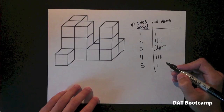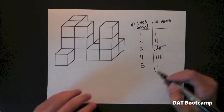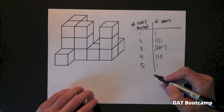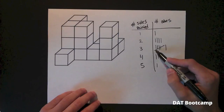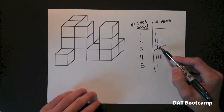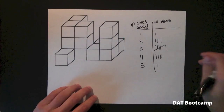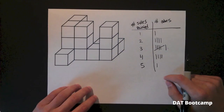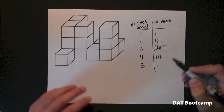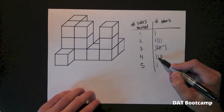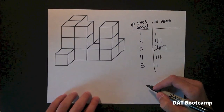Now if the question on the DAT asks how many cubes have three of their sides painted, you count one, two, three, four, five, six — six cubes have three sides painted. How many cubes have four of their sides painted? One, two, three, four. There you go — it's that easy.